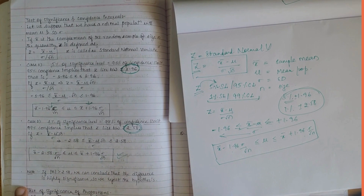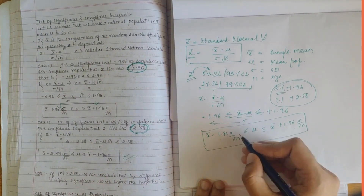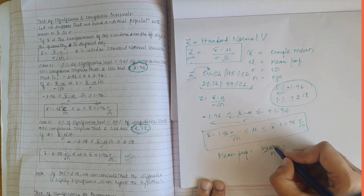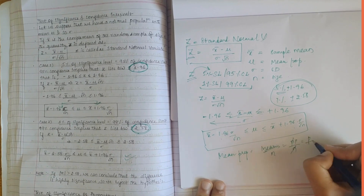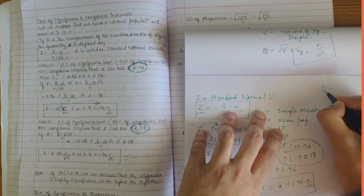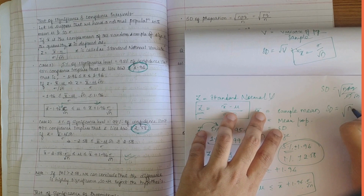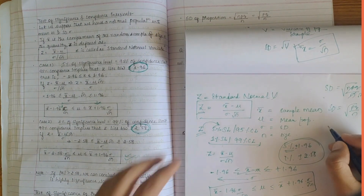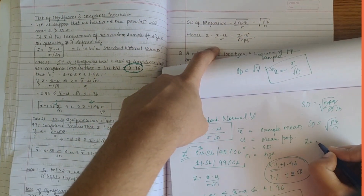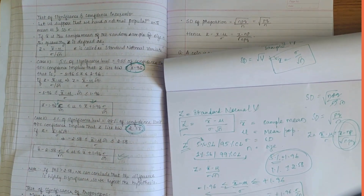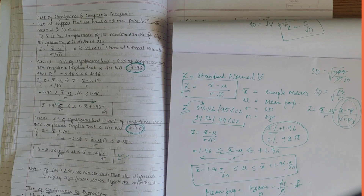Now let's discuss the test of significance of proportions. The mean proportion can be written as np divided by n, which equals p. The standard deviation of proportion is the square root of npq divided by n, which simplifies to the square root of pq over n. Combining mean proportion and standard deviation of proportion, the value of z equals x minus np divided by the square root of npq. These formulas will be applied when solving questions.